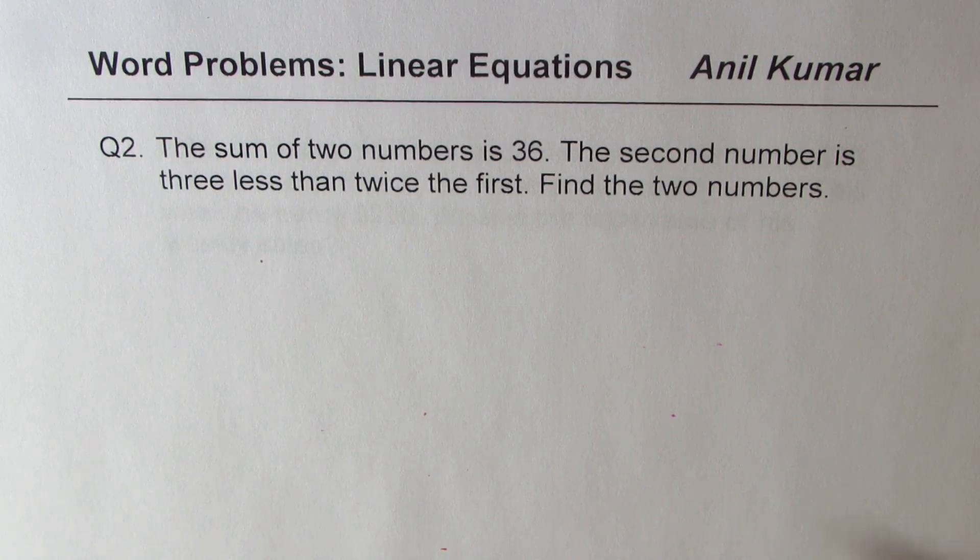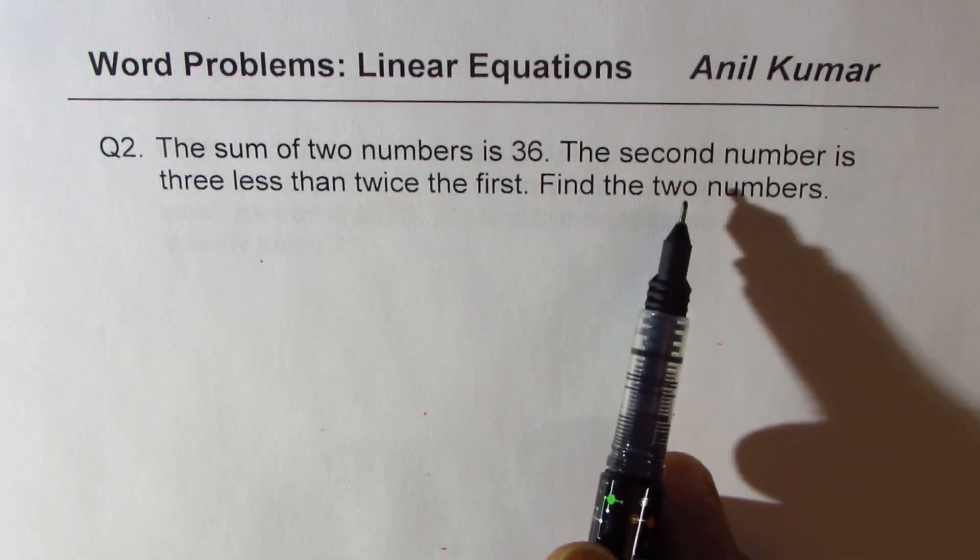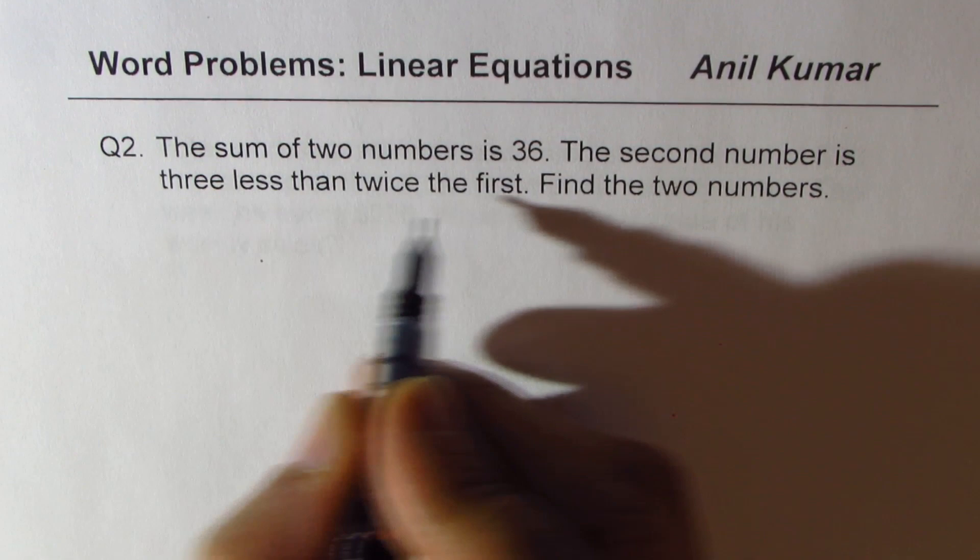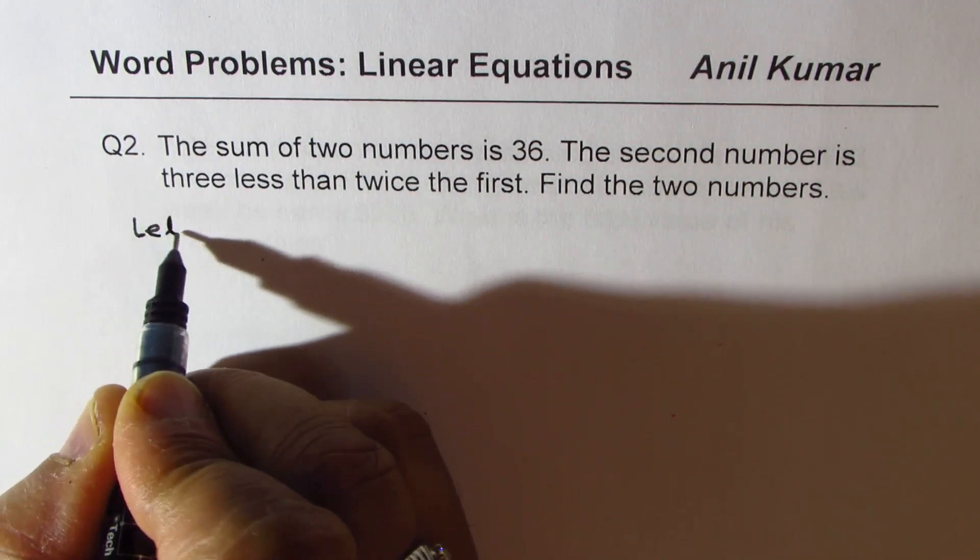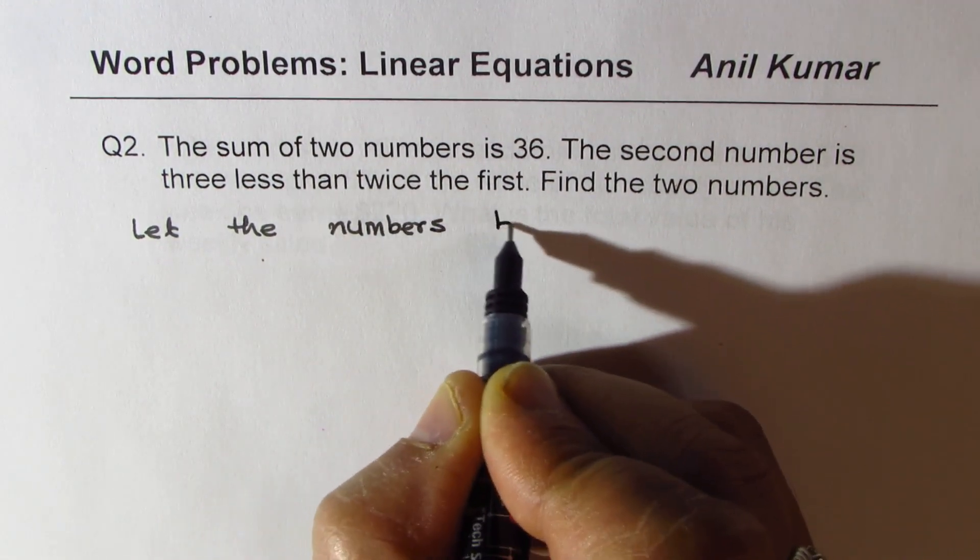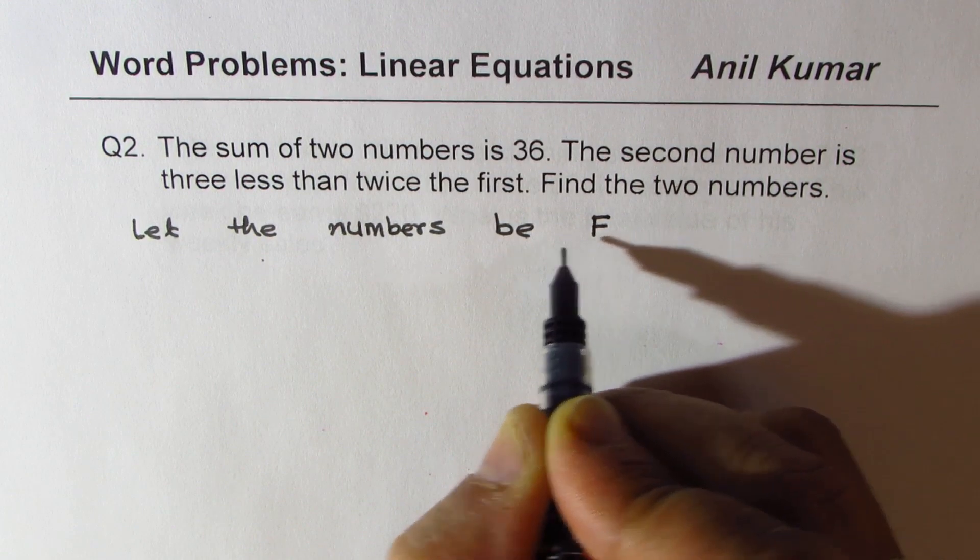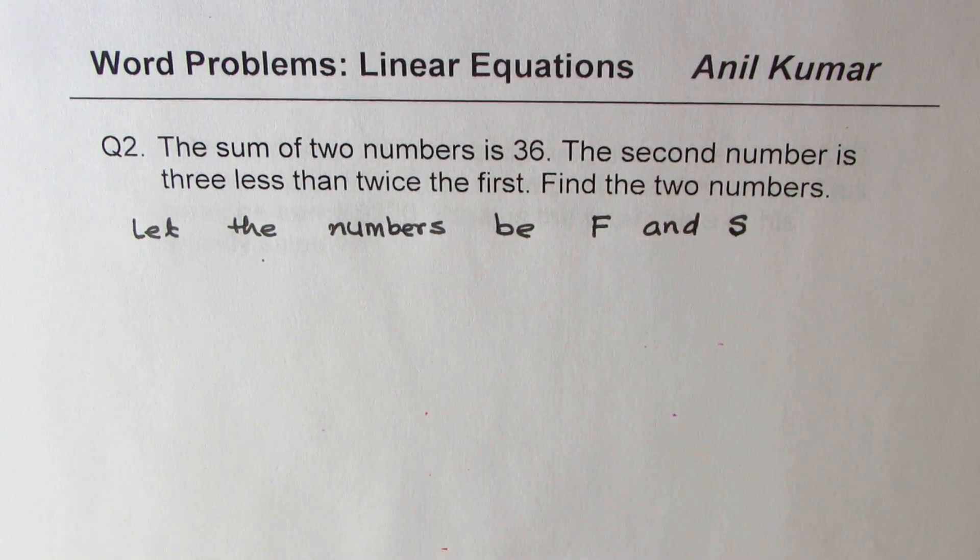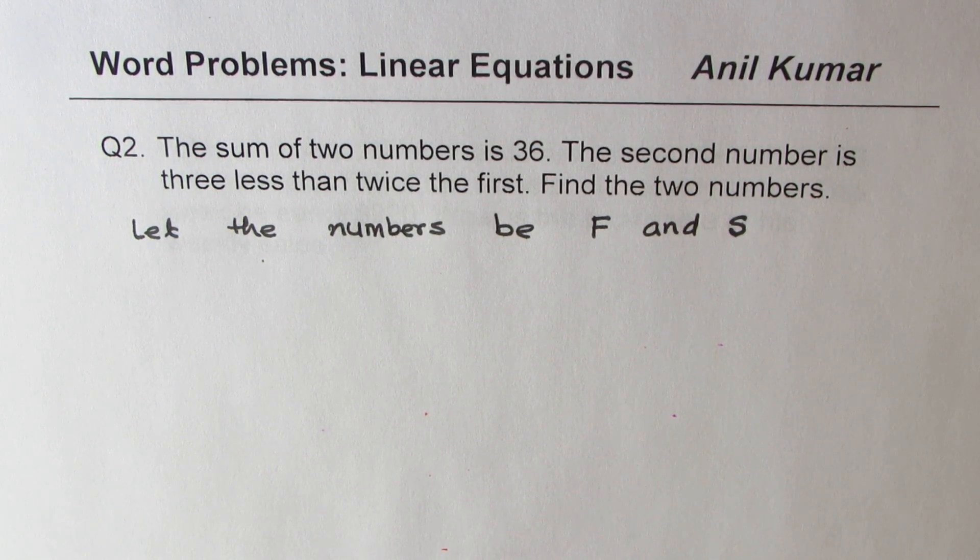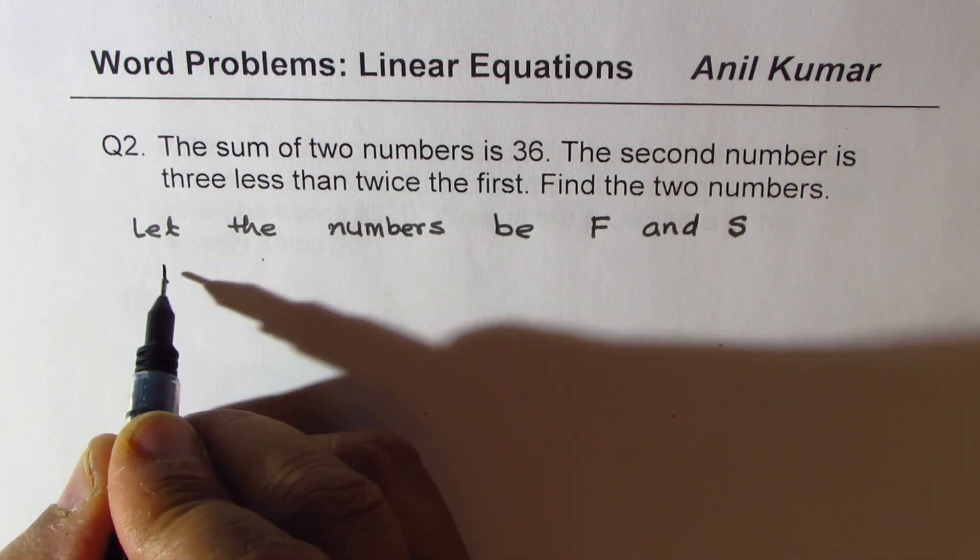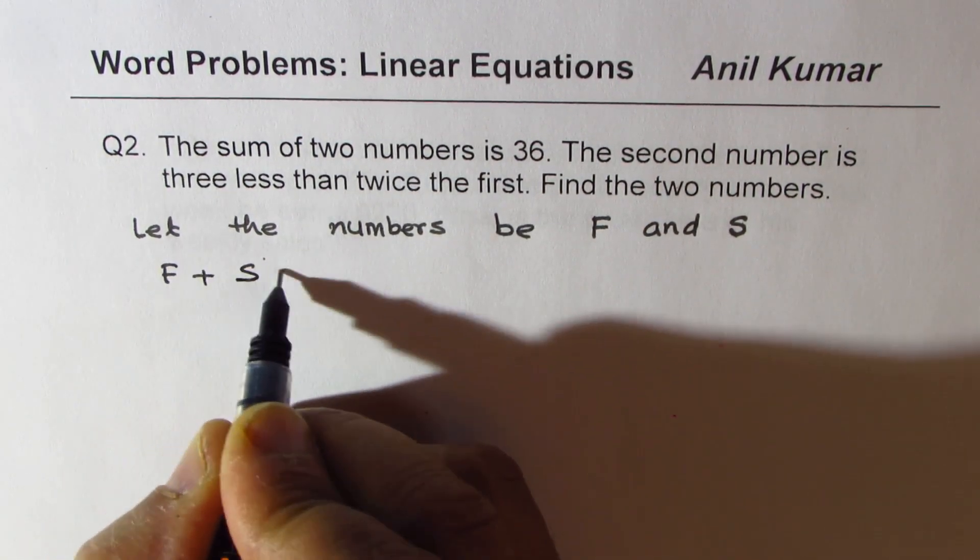Question number two: The sum of two numbers is 36. The second number is three less than twice the first. Find the two numbers. So let's define the variables. We select the numbers be first F and S, first and second. Variables should have a proper name which helps you to solve the equation. Now let's write down the equation. The sum of two numbers is 36, that means first number plus the second number is 36.